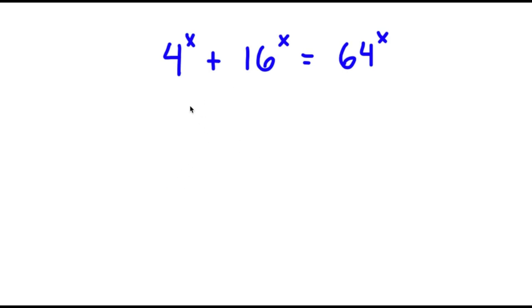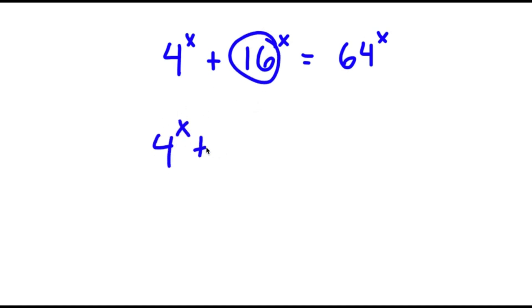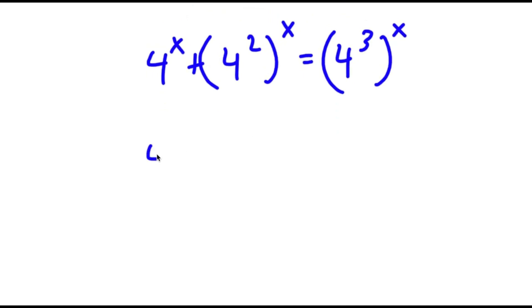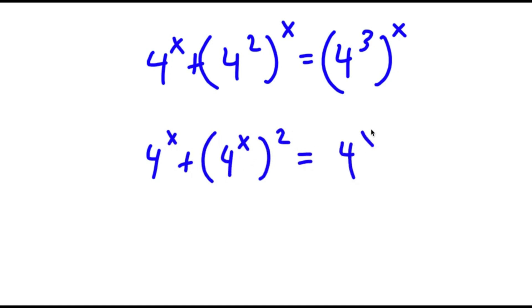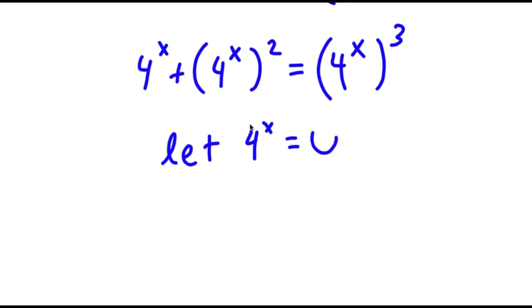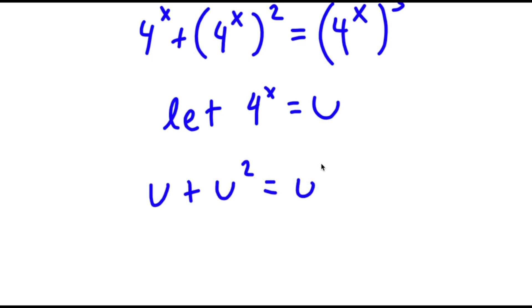In this problem I have 4 to the power of x plus 16 to the power of x is equal to 64 to the power of x. Now 16 I can rewrite as 4 squared, and 64 I can rewrite as 4 to the power of 3. So I rewrite this as 4 to the power of x, plus 4 to the power of 2x, is equal to 4 to the power of 3x. Now I'm going to let 4 to the power of x equal to the variable u. So now I have u plus u squared is equal to u to the power of 3.